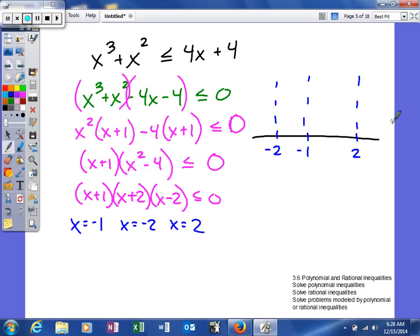So normally what we do is plug in test values. Plug in like negative 3 to figure out whether it's positive or negative. Here plug in negative 1.5, zero, and maybe 3. Just plug it in and determine whether it's positive or negative.